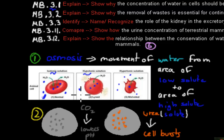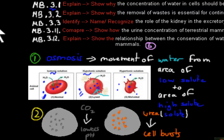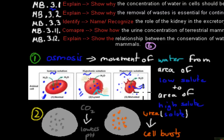Hypo means low, so we have low solute outside compared to inside. Osmosis is the movement of water from an area of low solute to high solute, so in this case water would travel into the cell, causing the cell to burst — obviously that's not normal function. In the other case, we have a hypertonic solution — hyper means high, so we've got more salt in the solution than inside. Water travels out of the cell because of osmosis, causing the cell to shrivel up.